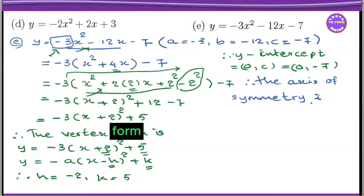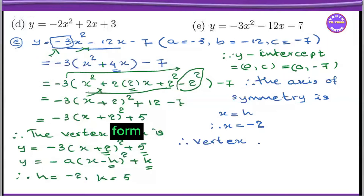So this c term — x is equal to h. Therefore x is equal to h. So minus 2 is equal to h. This is the vertex. So this is the vertex. V-E-R-T-E-X, vertex. The vertex is at minus 2, 5.